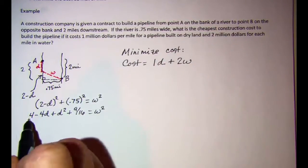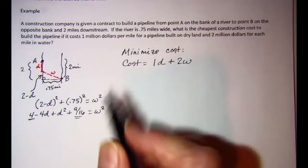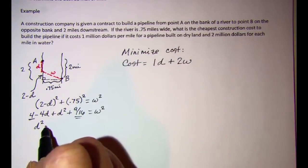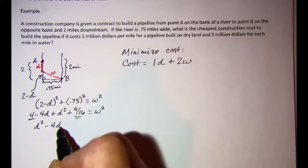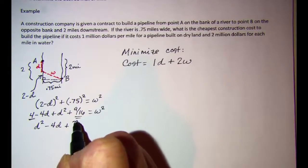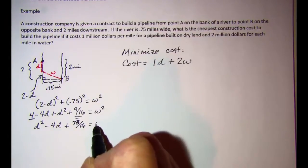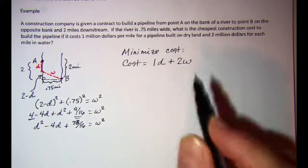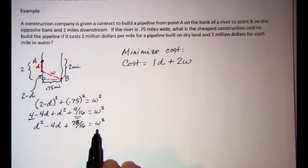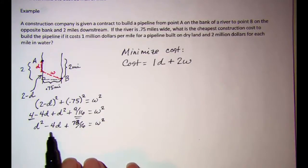We can combine the constants 4 and 9/16, ending up with D² − 4D + 73/16 = W². To get an expression for W, we square root both sides, and we'll also find a common denominator of 16.